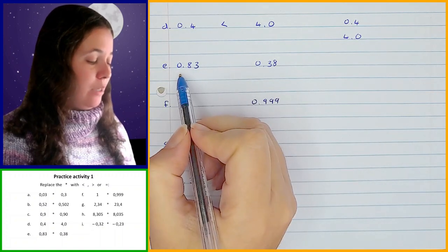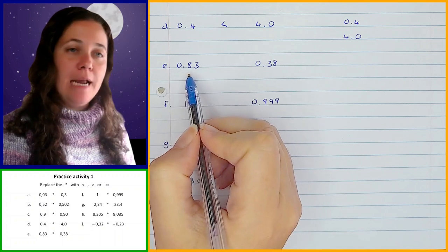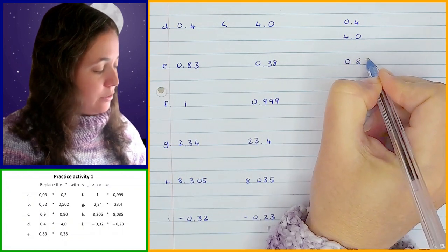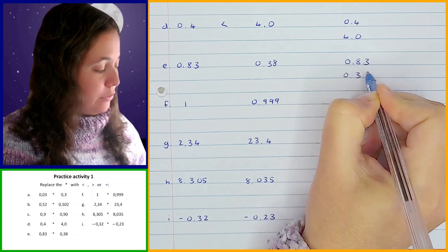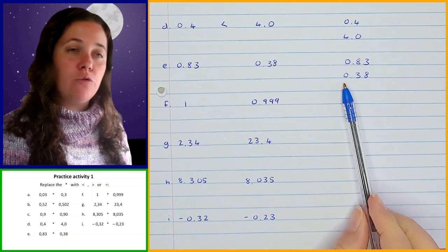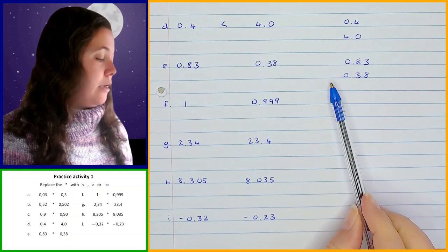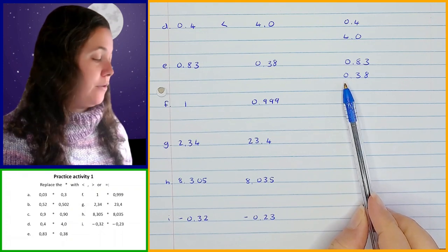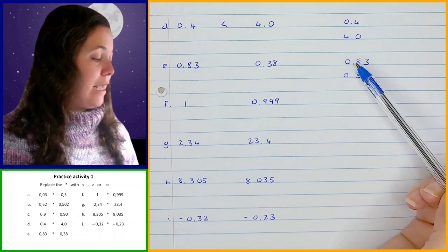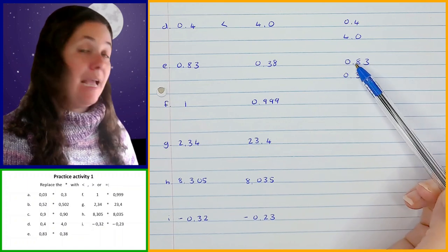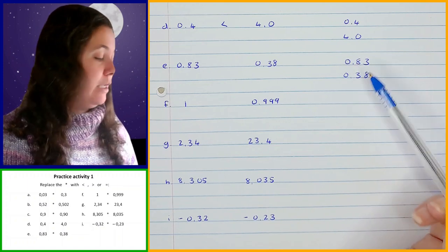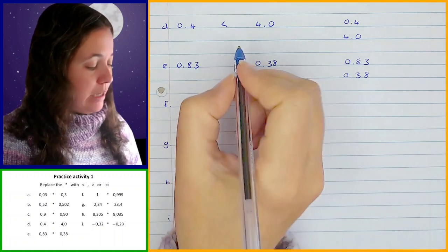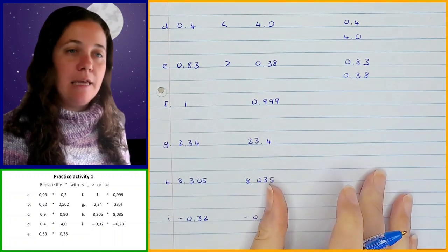Then question E: we've got 0.83 and 0.38. When I compare those, moving from left to right, first in my ones position I've got zeros — the same so far. Then in my tenths position I've got 8 here and 3 there. 8 is greater than 3, which means that 0.83 is going to be greater than 0.38.